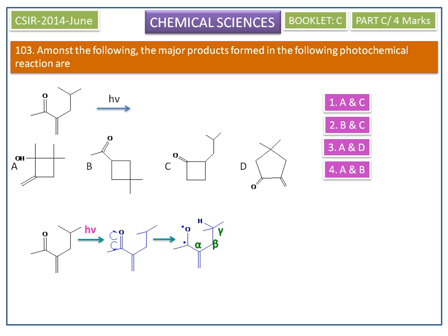This excited carbonyl abstracts gamma hydrogen intramolecularly to produce 1,4-biradical as a primary product.